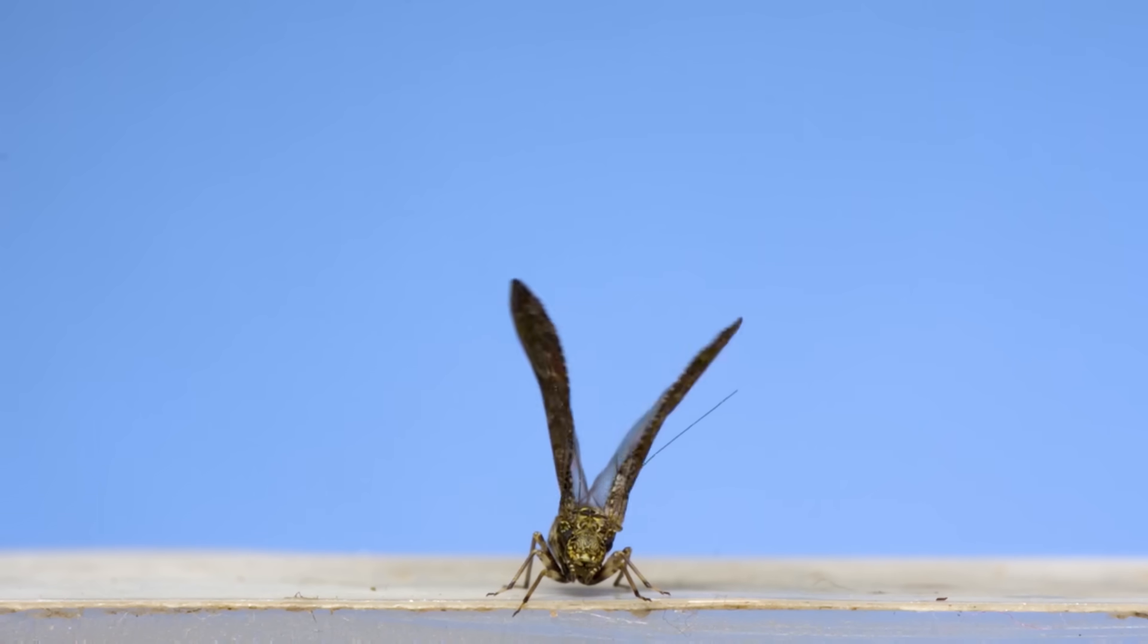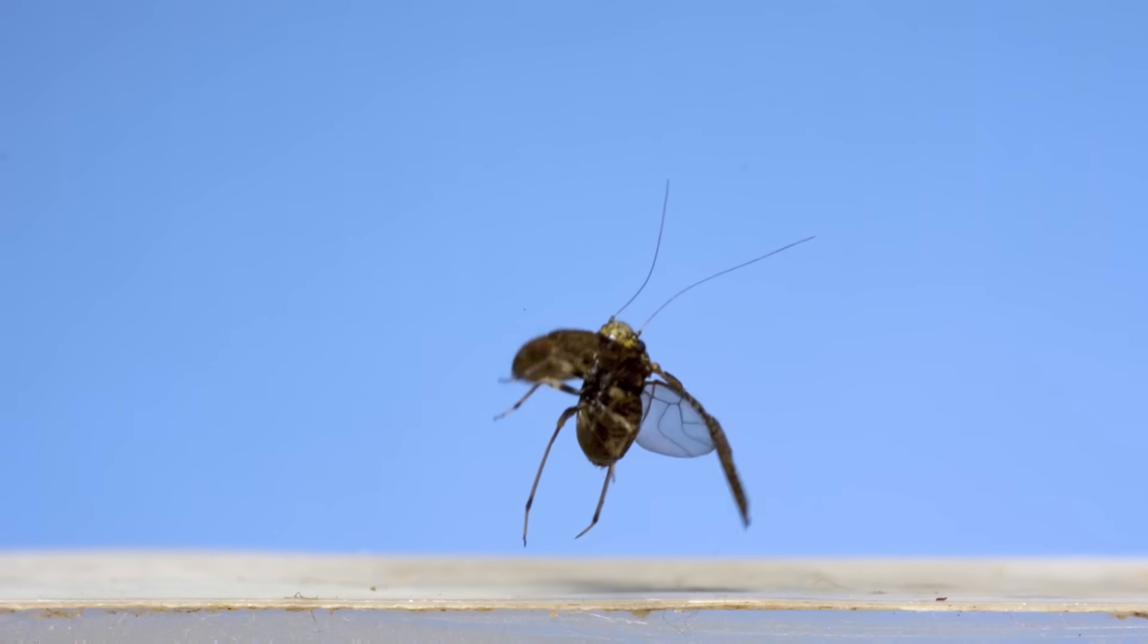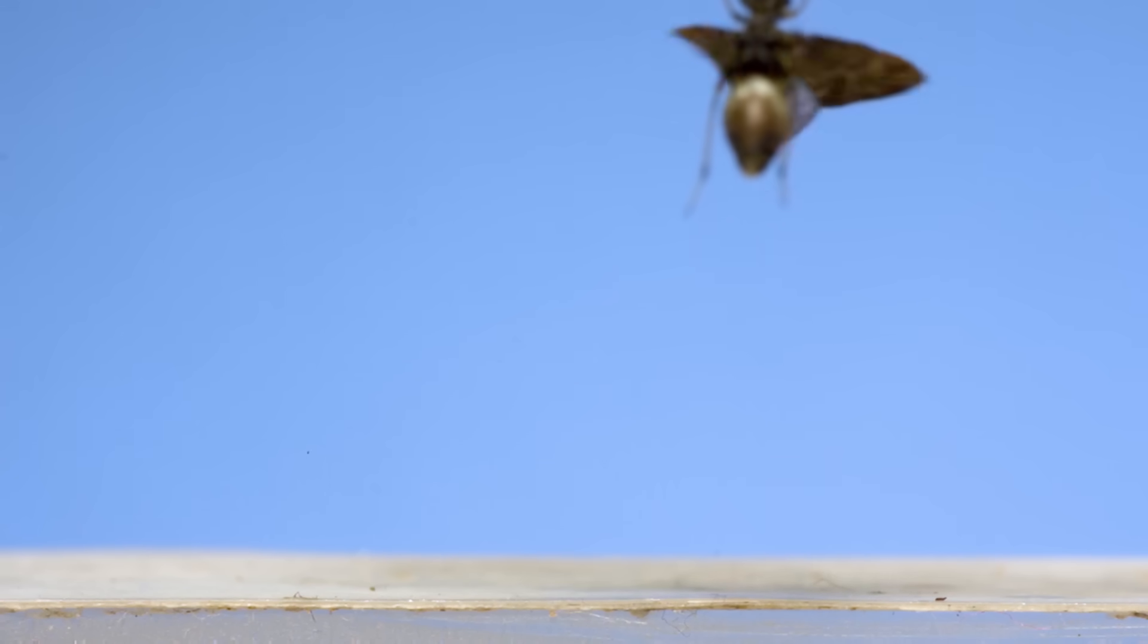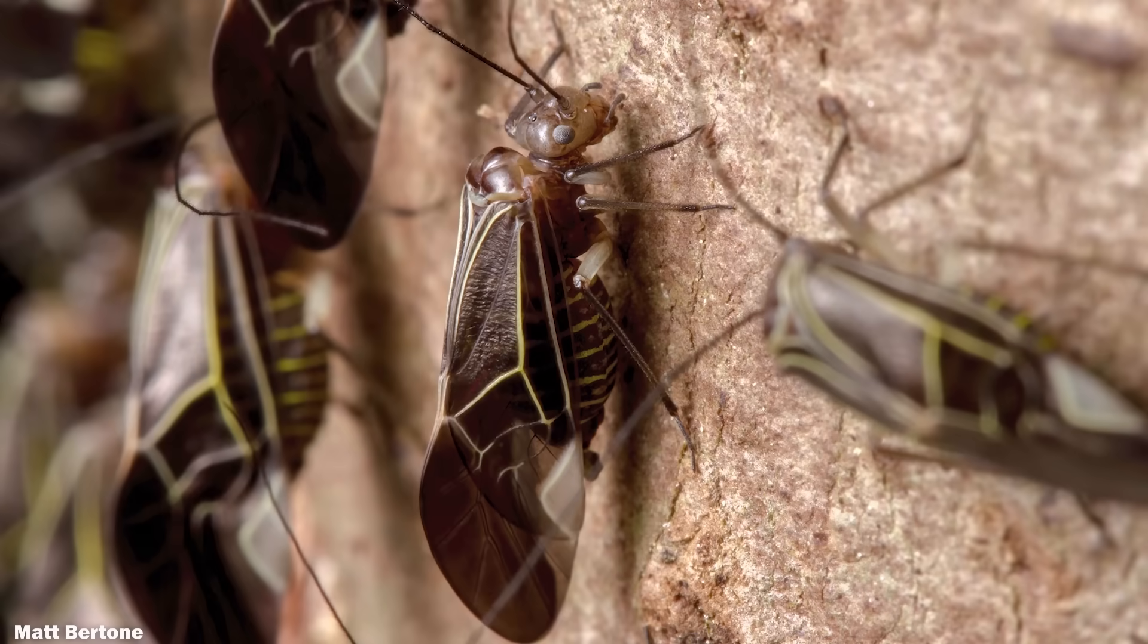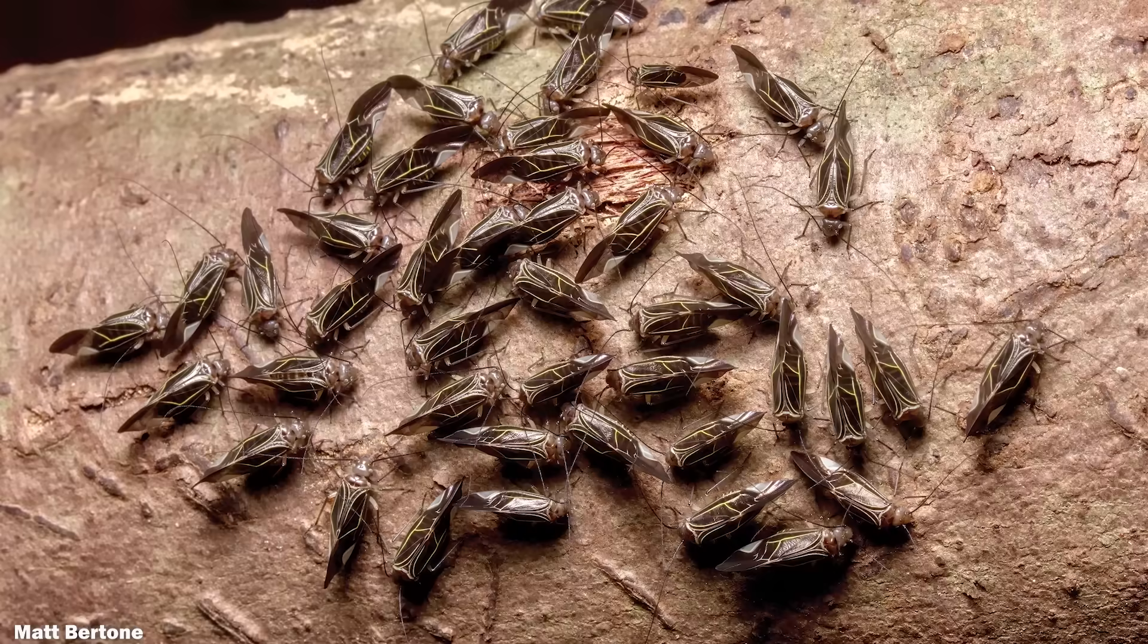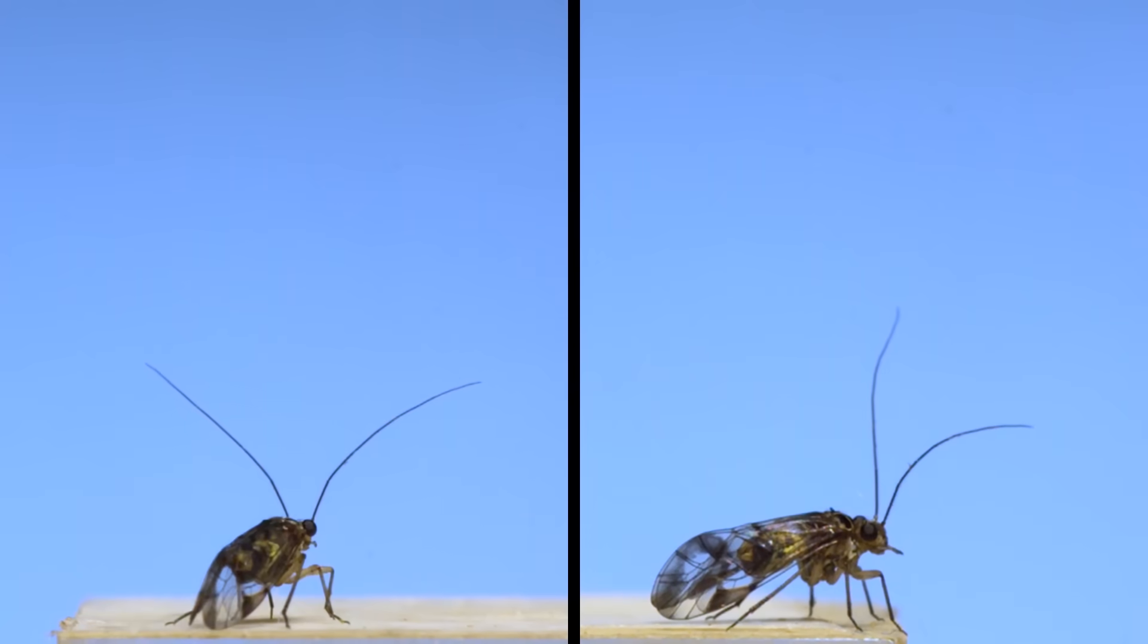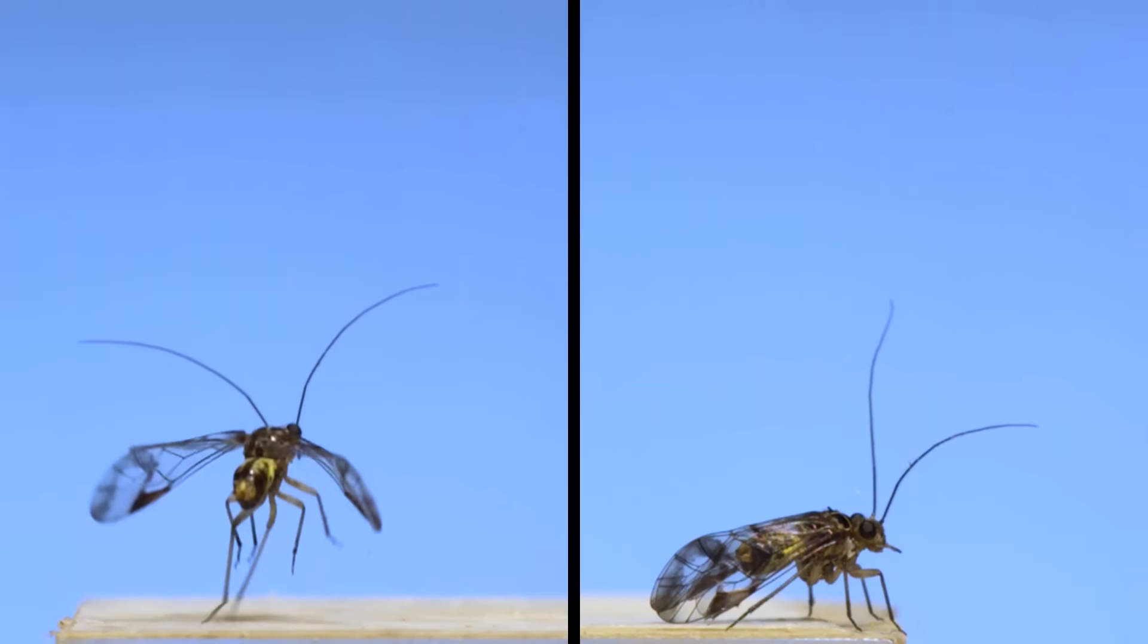This next little creature and the ones that follow are bark lice. You can find them hanging out on trunks of trees, sometimes in big groups, where they scavenge on lichen or whatever else they can find. Despite being known as lice, they're harmless to the plants that they live on.